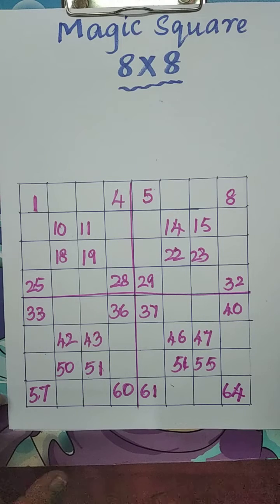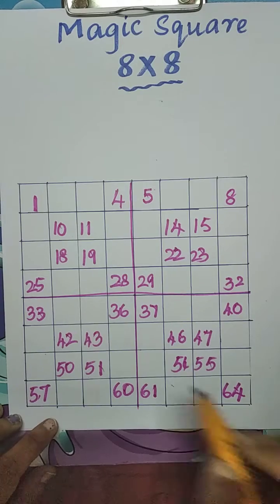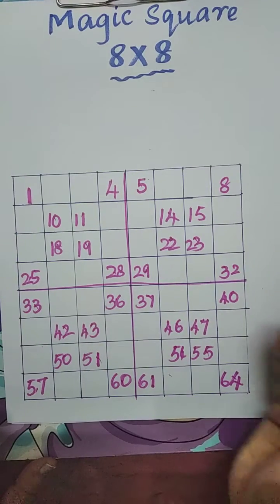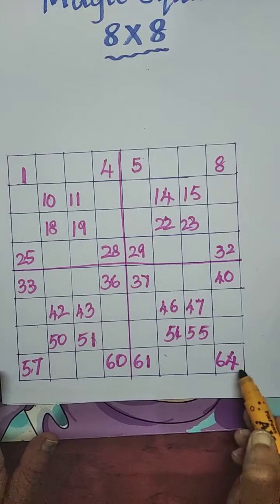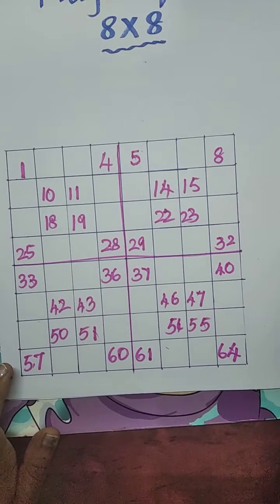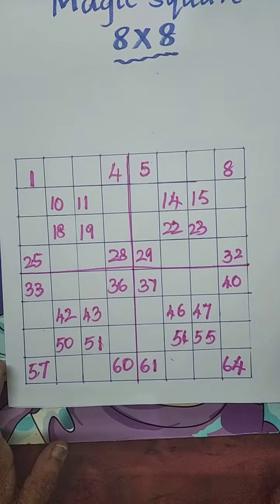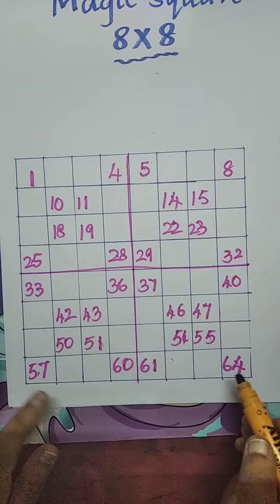Now we have to fill remaining boxes. That we have to move backward, down to up. Movement right to left. Start from 1. Already these boxes filled. Ignore it. What are the boxes we filled here? Those boxes we have to ignore.